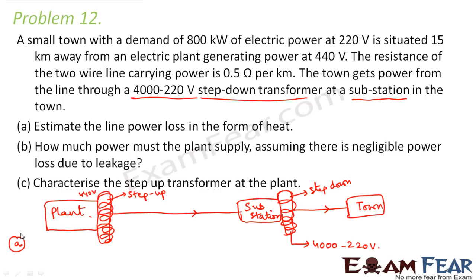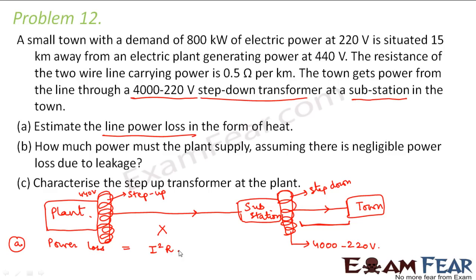In the first part of the problem we have to calculate the line power loss in the form of heat. There will be no considerable line power loss from plant to the substation, because the step-up transformer increases the voltage and decreases the current significantly. So the line power loss is only involved from the substation to the town. The power loss is given by I²R — the total resistance of the wires from substation to town multiplied by the square of the current transferred.